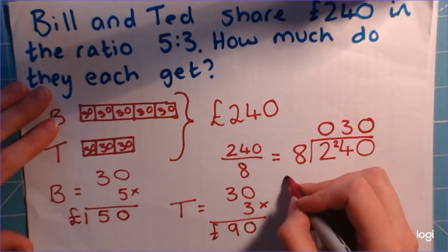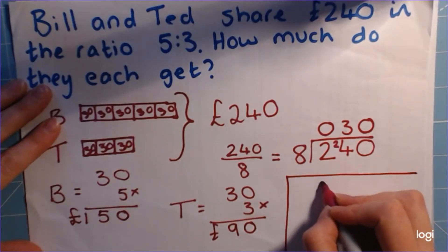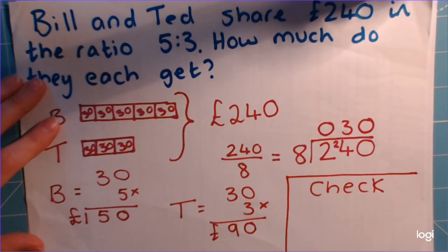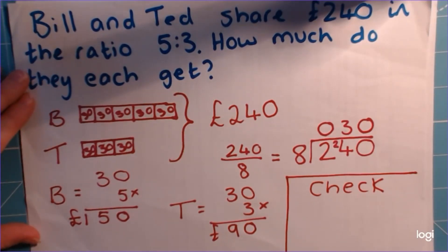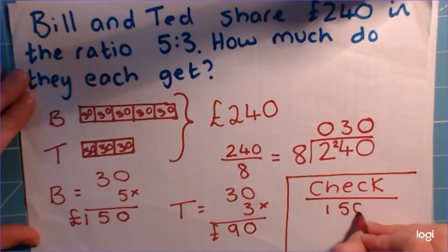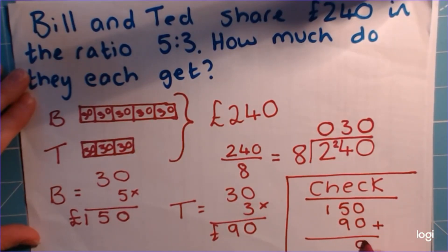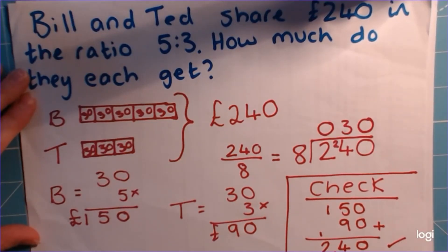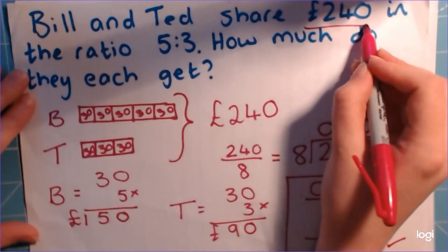The last thing we always need to do is a check. We've shared out £240 between Bill and Ted, so all together they should have £240 — we want to make sure they haven't lost any money along the way. So we've got Bill's portion, £150, add Ted's, which is £90. We're hoping, if we've done it right, we're going to get 240. And yes, the check works — we've got it right. The numbers add up to what we were sharing out in the first place.